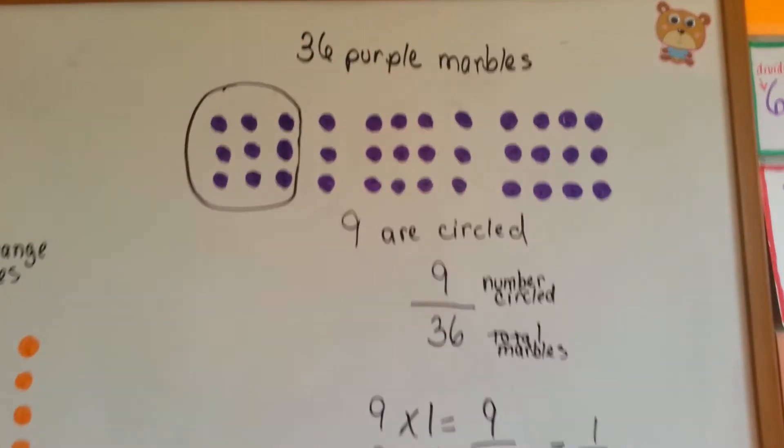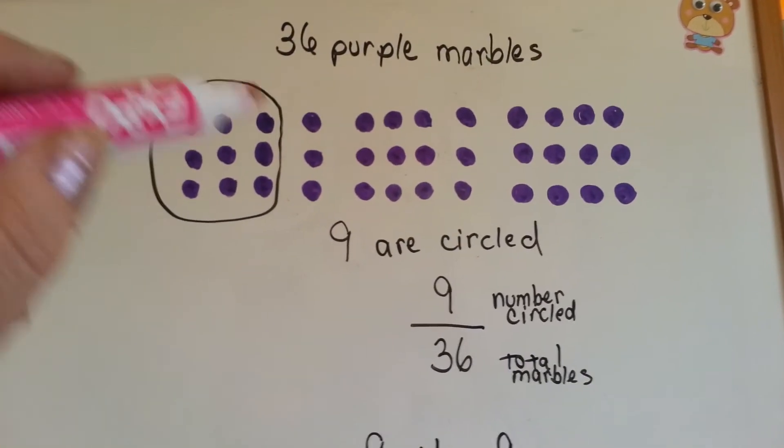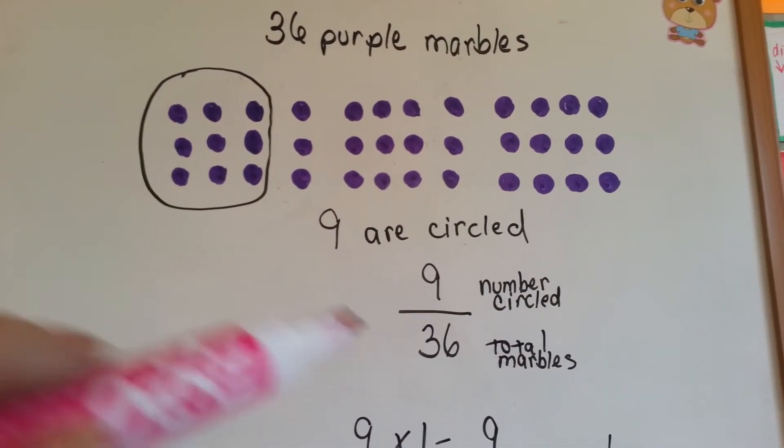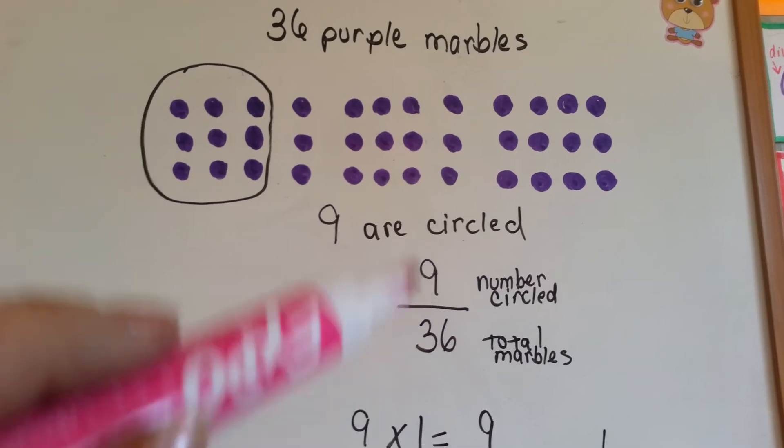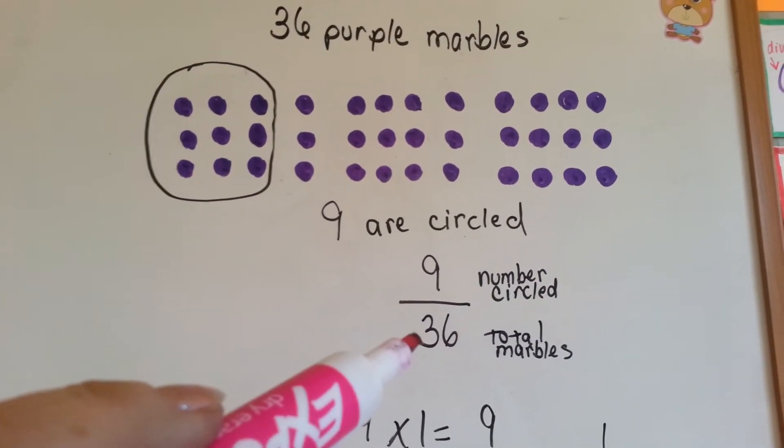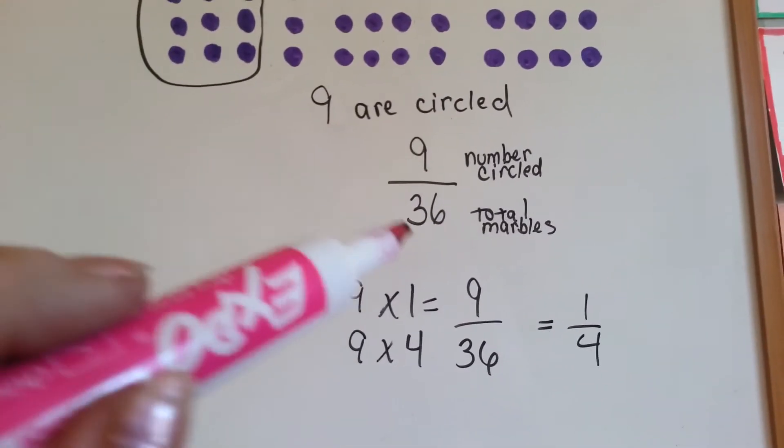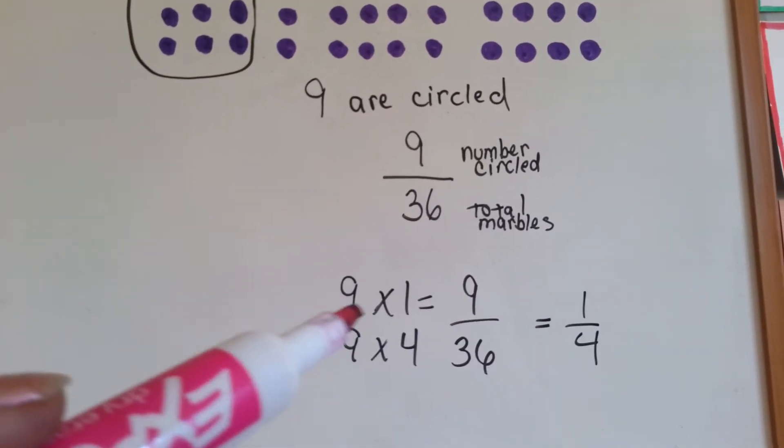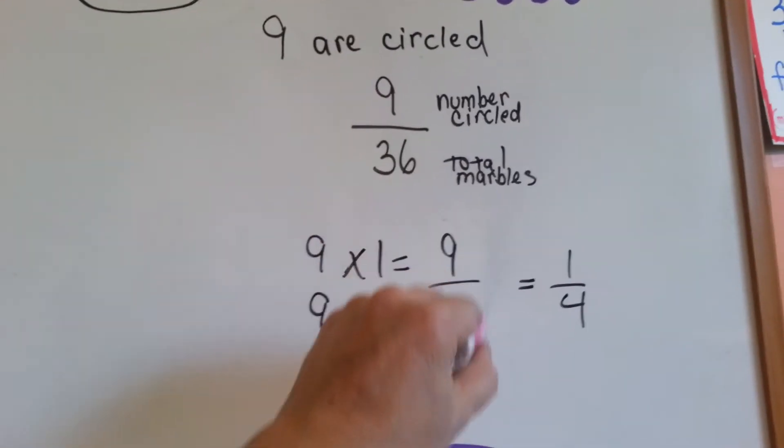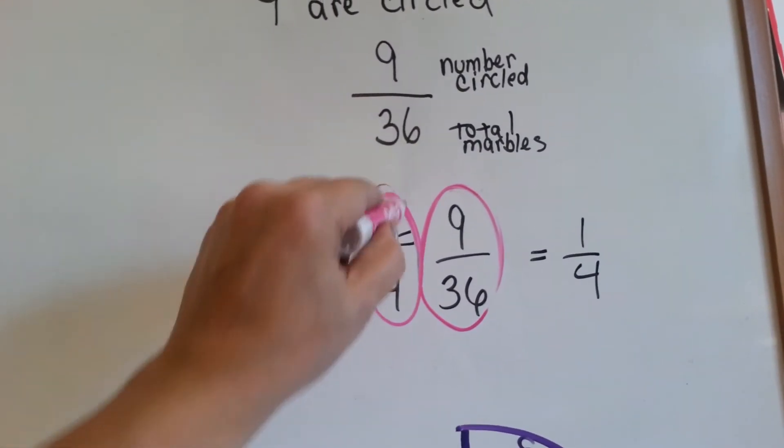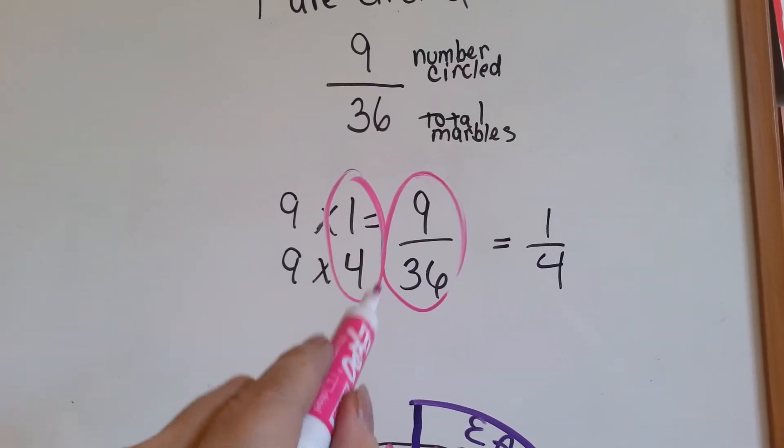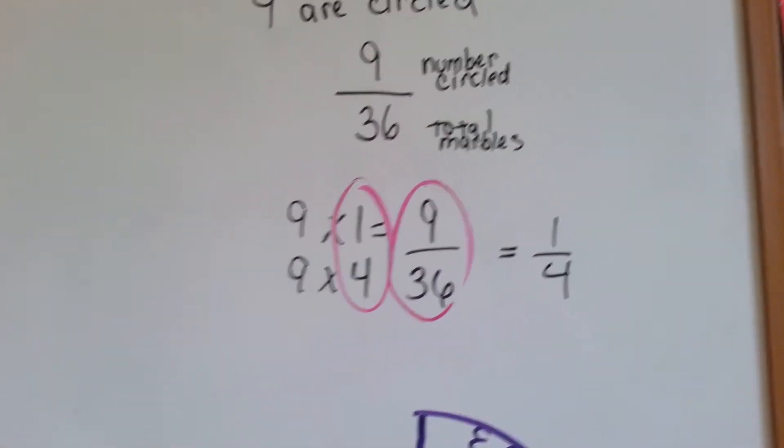Now we've got thirty-six purple marbles. Nine are circled. Nine of the thirty-six are circled. Thirty-six total, nine are circled. Nine thirty-sixths. That's the fraction. How many times can nine go into thirty-six? Nine times one is nine. Nine times four is thirty-six. Here's our nine thirty-sixth, and here's our one-fourth. It's how many times that nine goes into there. One-fourth is equal to nine thirty-sixths.